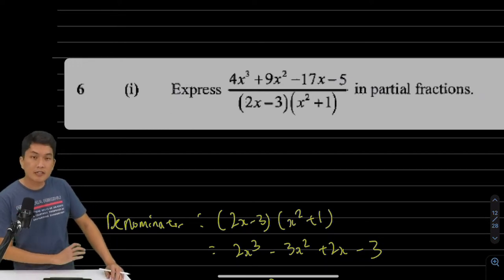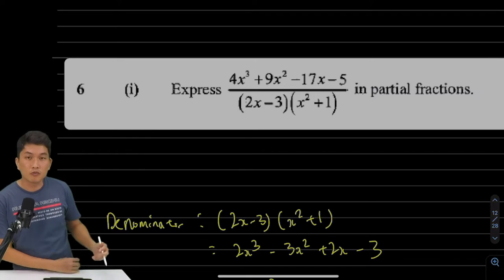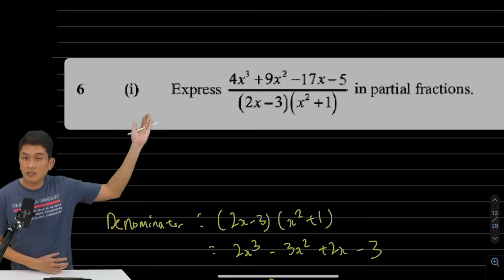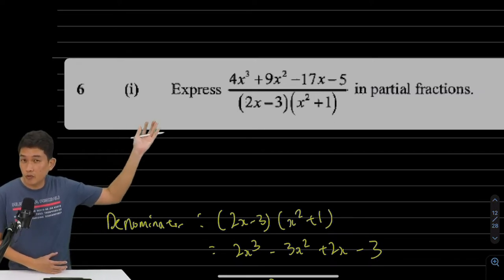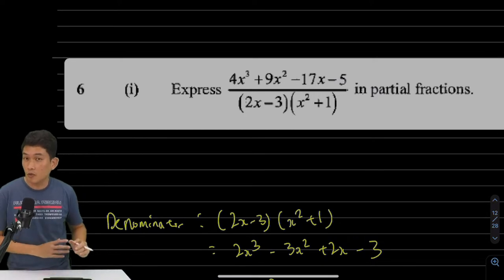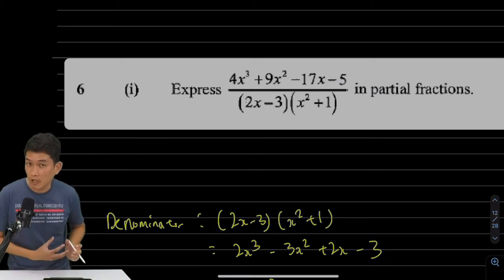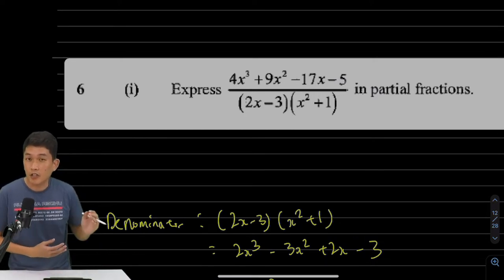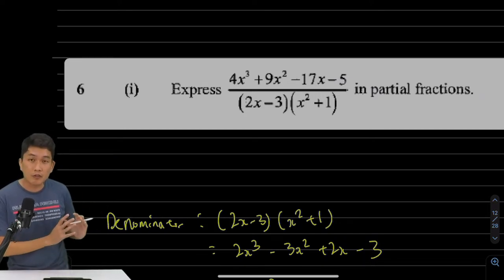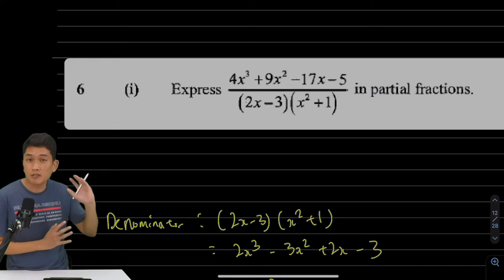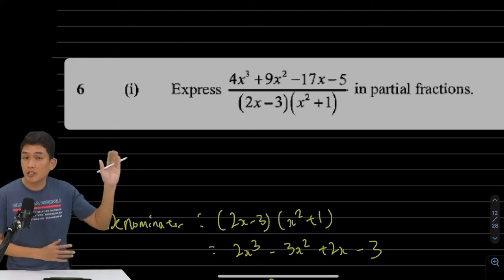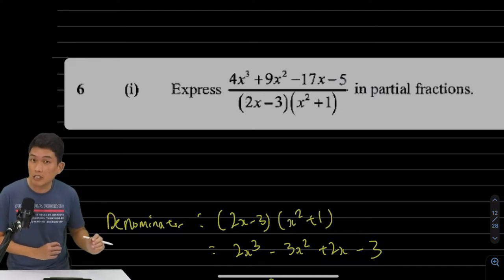First of all, if you look at this thing that we are supposed to do partial fractions to, this thing that looks like a fraction with algebraic terms inside is what we call a rational function. Just a function in terms of a ratio. And what that means is just you have a polynomial function in your numerator and a polynomial function in your denominator.